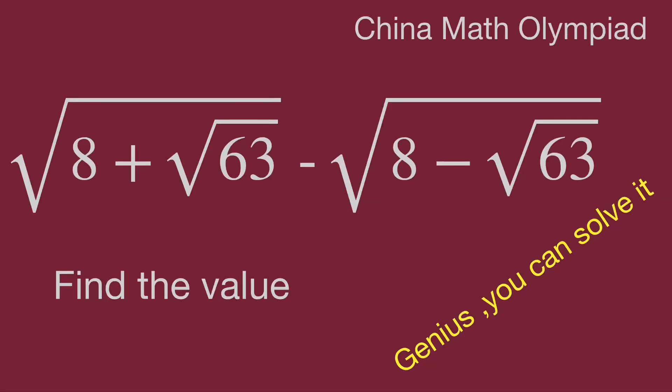Hello, you are watching Barahibo Math Genius Readers. These questions come from China Math Olympiad. Find the value for the square root of 8 plus √63 minus the square root of 8 minus √63. In this video, we share two methods to get the value. Pause the video and find the answer if you are interested, then keep watching to find the result.